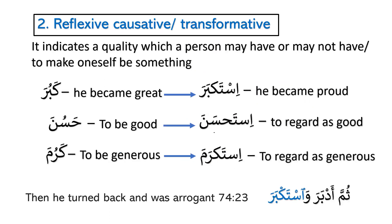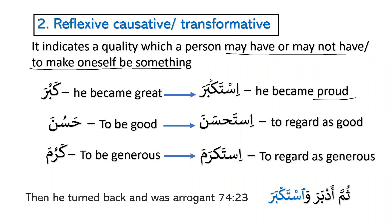The second characteristic of Form 10 is reflexive, causative, or transformative — indicating a quality a person may or may not have, or making oneself appear to be something. Examples: kabura means he became great; istakbara means he became proud or arrogant. This is something a person may truly have or may only pretend to have. It is reflexive and causative — you cause something to yourself or transform yourself into something you are not.